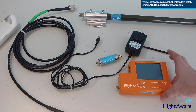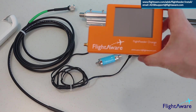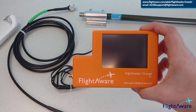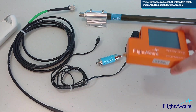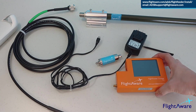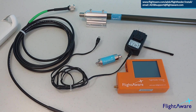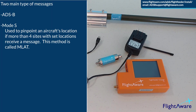Let's start with the main part, the Flight Feeder. Inside are several circuit boards that take the signal received by the antenna, translate the signal into a digital stream, and then send the data to FlightAware. There are two main types of messages received by this setup: Mode S and ADS-B signals.